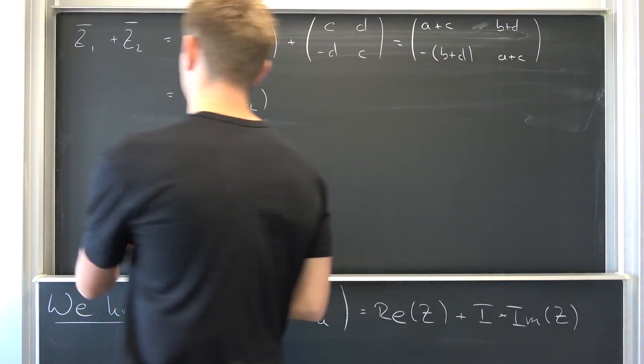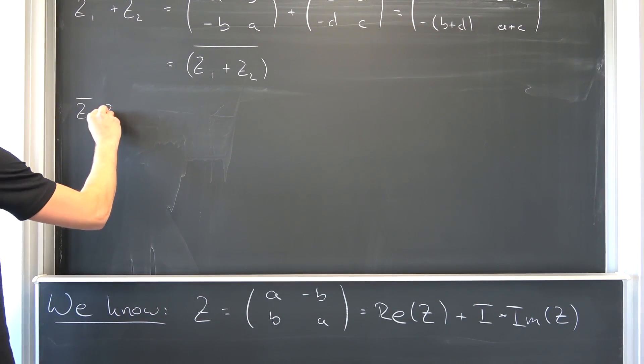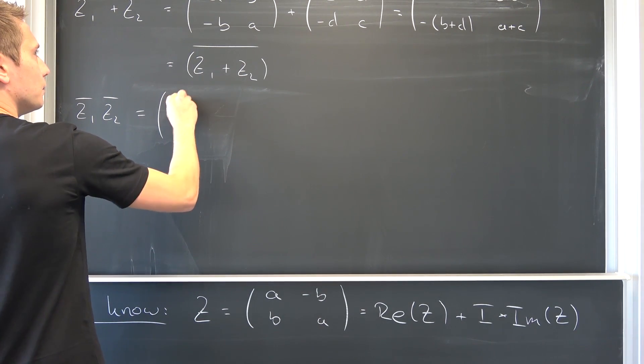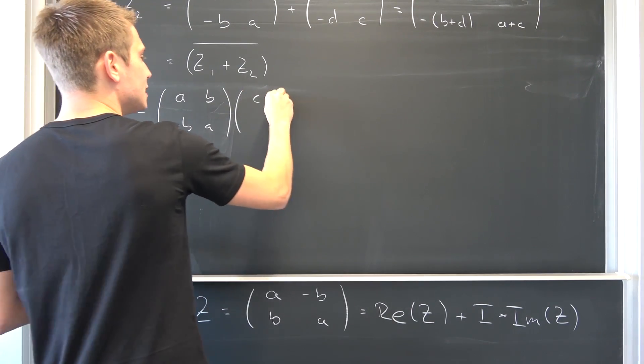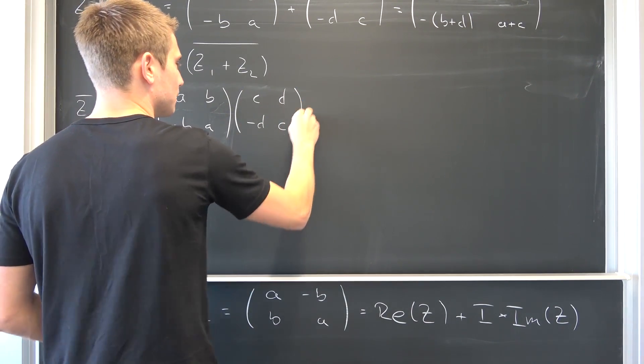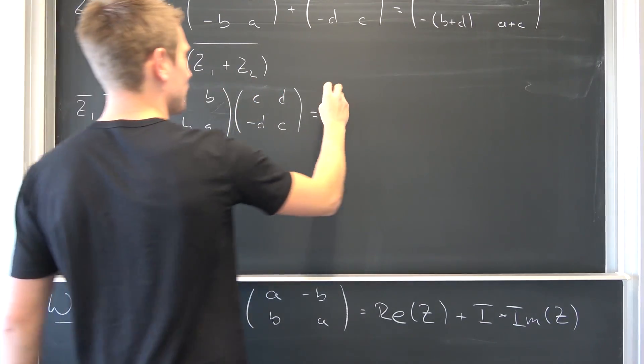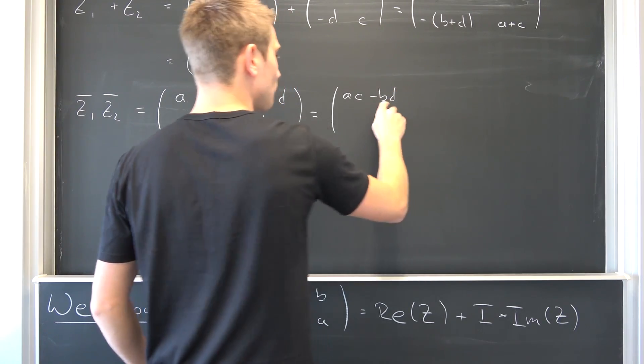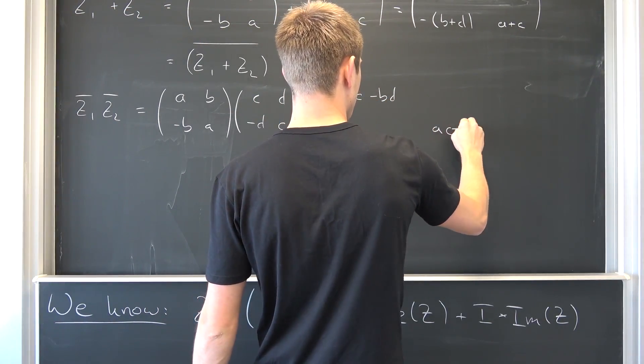What about multiplication? If we were to have z1 conjugate times z2 conjugate, we are going to end up with a b, negative b a, times c d, negative d and c. Leaving us with, doing this basic stuff yet again as always, we are going to have ac minus bd. This is the same that we had the last time, and it's going to be the same entry down here. And now we are going to have for next one ad plus bc.